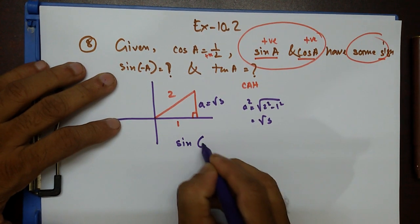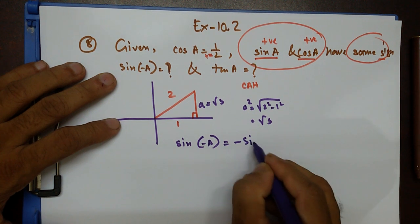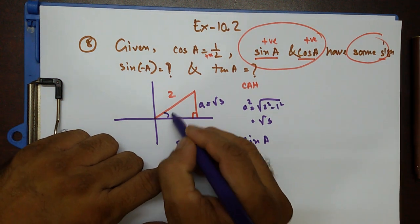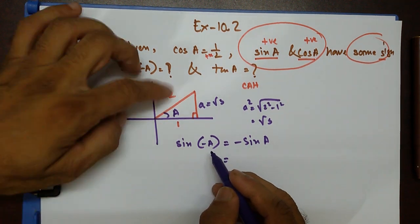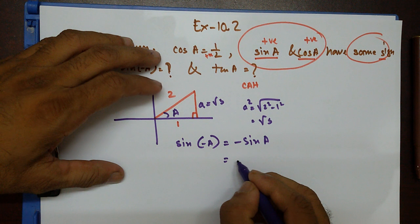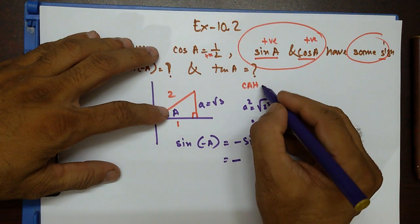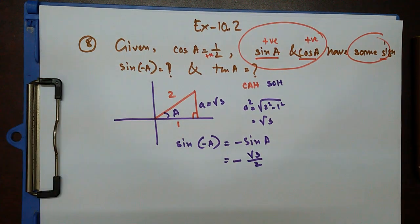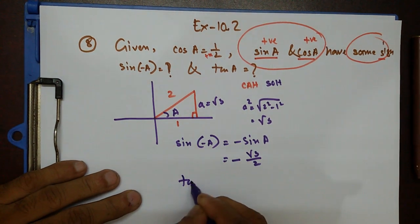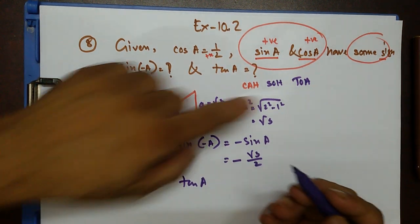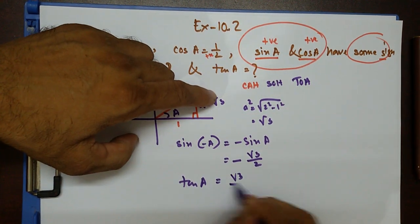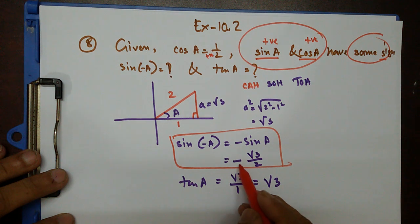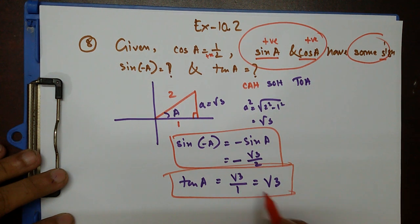Sine negative a means negative sine a. Since a is in the first quadrant, a negative angle falls in the fourth quadrant where sine is negative. So sine negative a equals negative of opposite over hypotenuse, which is negative √3 over 2. And tan a equals opposite over adjacent, so that's √3 over 1, which is √3. Final answers: sine negative a equals negative √3 over 2, and tan a equals √3.